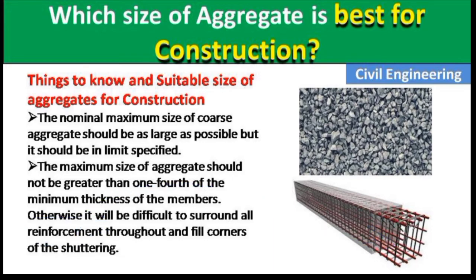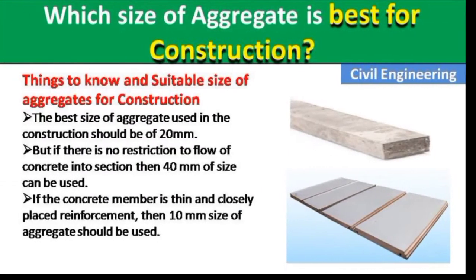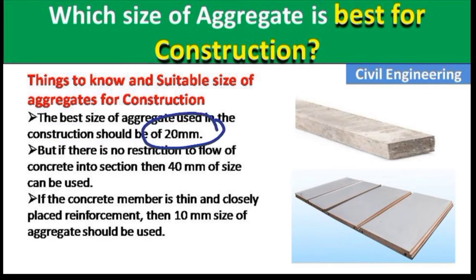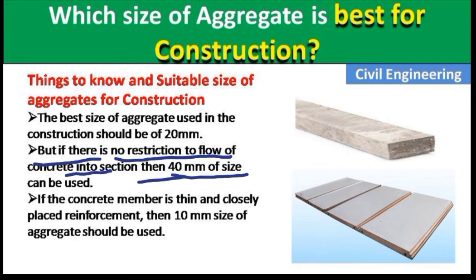The base size of aggregate used in construction should be 20 mm. It is recommended that the base size is 20 mm. But if there is no restriction to the flow of concrete into a section, then a 40 mm size can be used.